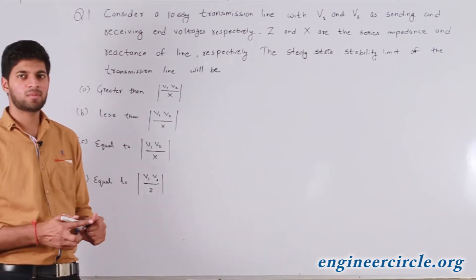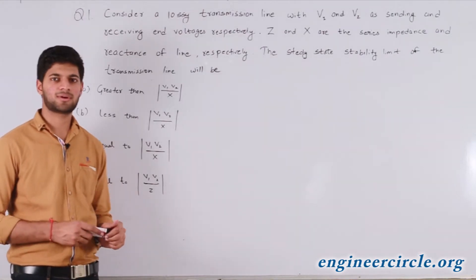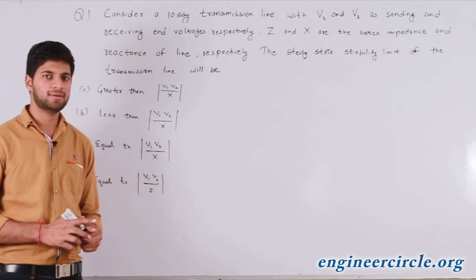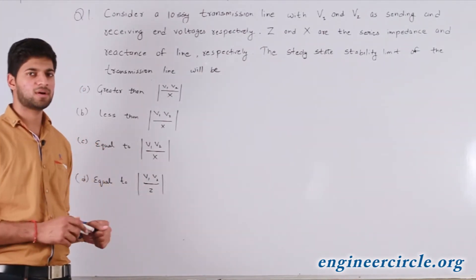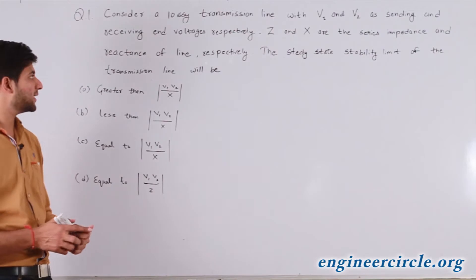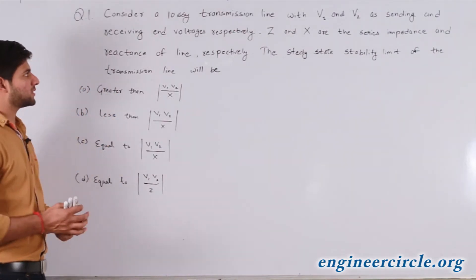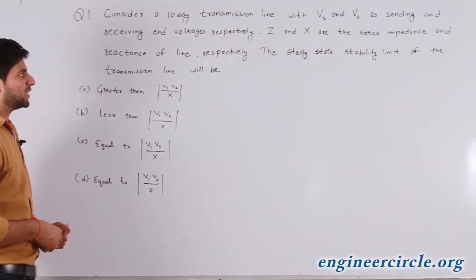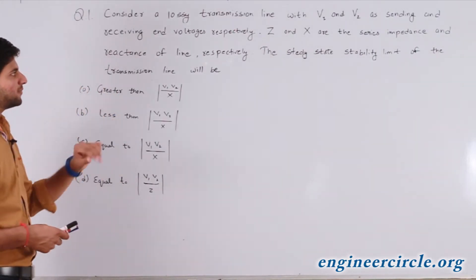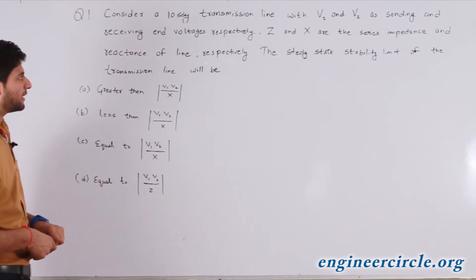Hello guys, here we will be dealing with the previous year GATE questions of 2018 of the subject power systems. The first question is: we consider a lossy transmission line with line voltages V1 and V2 as sending and receiving end voltages.